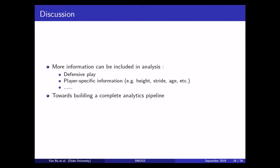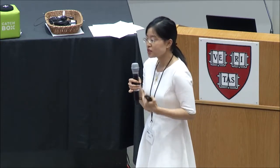So in our model, we have included a lot of information from optical tracking data. But of course, more information can be included in analysis. One very obvious example is the defensive play. We have implicitly included the defense, the visiting teams in the time varying covariates. But it might actually help us a lot if we explicitly include the styles of the defense, the visiting teams, into the model. And another example is we actually can consider including more player-specific general information, like the player's height, or their stride, or their age, and so on.